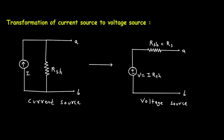Now we will see how to transform a current source into its equivalent voltage source. Here the current source is connected in parallel with a resistor. We have to convert this into its equivalent voltage source by connecting a series voltage source with this resistor. The resistor remains the same. The direction of the current source arrow is upward, so the polarity of the voltage source will be positive upward and negative downward.